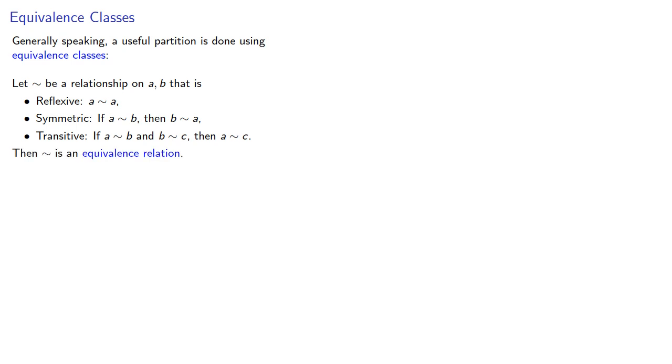Now I'm calling it squiggle, but the idea of an equivalence relationship is modeled after the equal symbol, though it's much more general. Once we have an equivalence relation, then given any A, the set of all things related to A using squiggle form the equivalence class, which we write this way, and we call A the class representative.